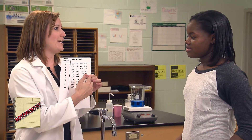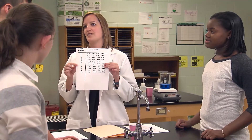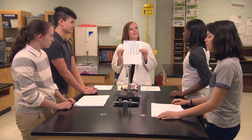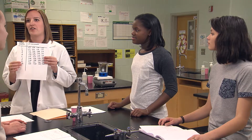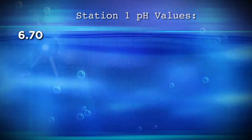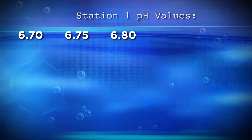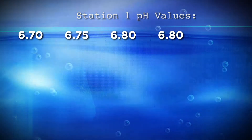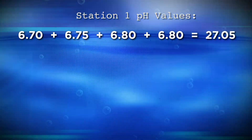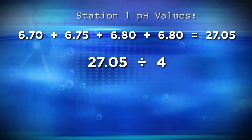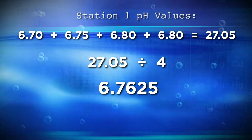Notice that every team did not find identical pH values at each station — there are slight differences. Can anyone explain how to calculate the average pH at each station? For station one, for example, just add up the four pH numbers measured and divide by the number of measurements, which is four. Station one showed these four pH values: 6.70, 6.75, 6.80, and 6.80. When we add them up, we get 27.05. Then we divide 27.05 by 4, and the average pH at station one is 6.7625.